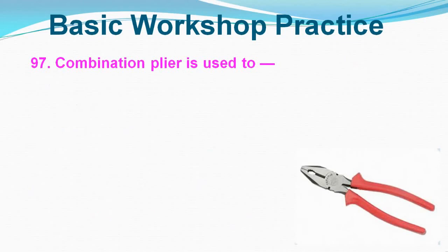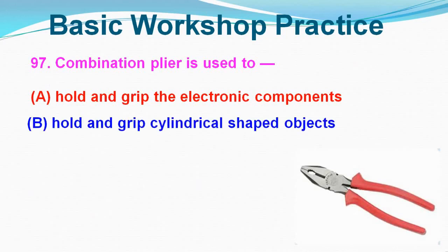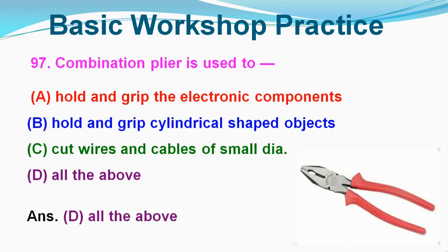Question No. 97: A combination plier is used for which of the following? Option A: Hold and grip electronic components, Option B: Hold and grip cylindrical shape objects, Option C: Cut wires and cables of small diameter, Option D: All the above. Correct answer is Option D, All the above.